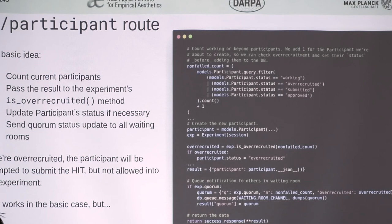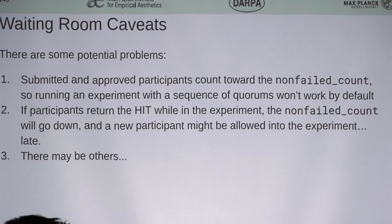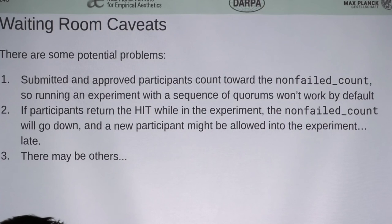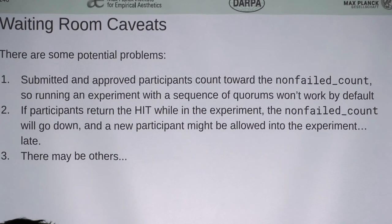Before returning, if your experiment has defined a truthy quorum value, we message all the other waiting room people using Redis Q so they know to either update the status bar or let people through. There are some gotchas: workers that have already submitted or been approved are always counted towards the quorum. That means if you're trying to run multiple series of recruitments — like 10 people at a time doing a game four times within a single experiment — you can't do that, because you'll exhaust the quorum on the first game and it'll never recruit for subsequent rounds.